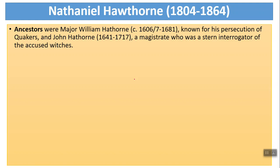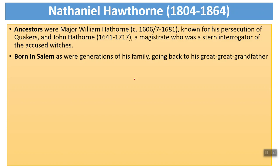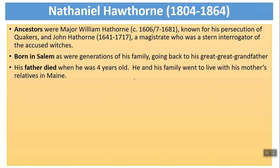So let's talk about Nathaniel Hawthorne. His ancestors — Major William Hawthorne — was known for the persecution of the Quakers, and John Hawthorne was known as a stern interrogator of the accused in Salem. There's some evidence that Hawthorne felt a kind of guilt about the deeds of his ancestors. You can compare it to someone today whose ancestors may have been slave owners or plantation owners — I think it's sort of that same type of guilt. He was born in Salem, Massachusetts, as were generations of his family going back to his great-great-grandfather.